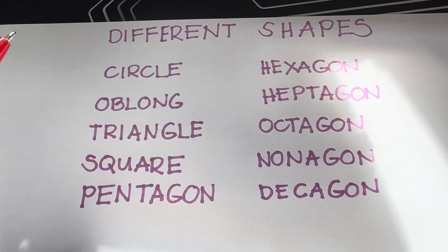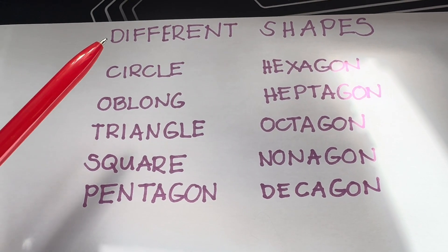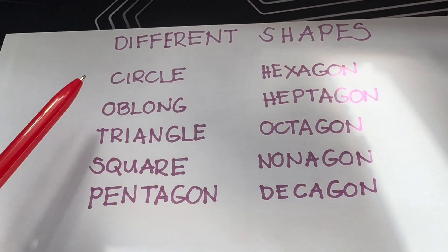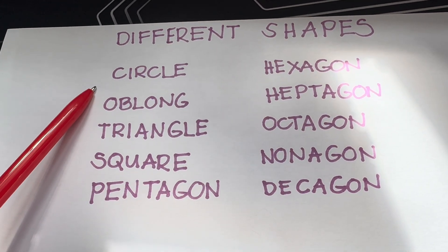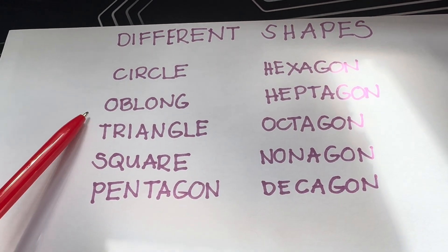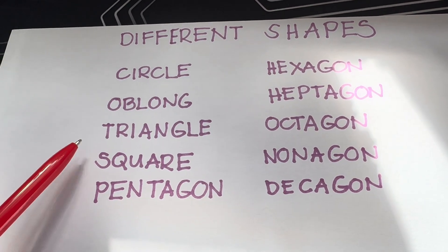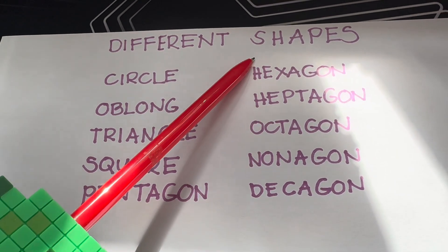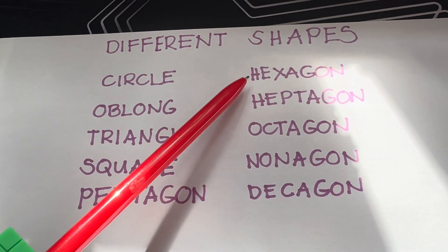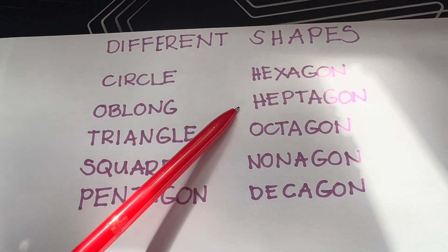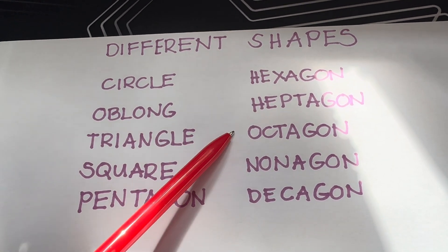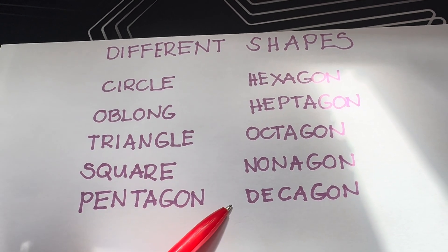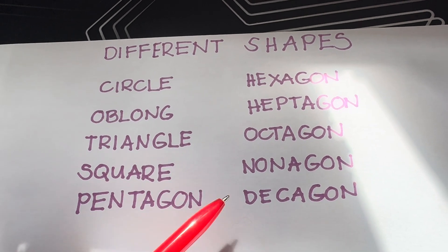Let's do a recap. Different shapes: circle, oblong, triangle, square, pentagon, hexagon, heptagon, octagon, nonagon, and decagon.